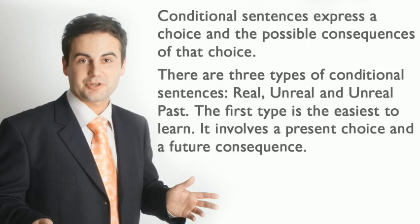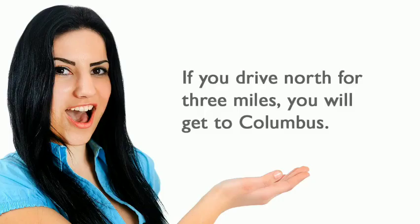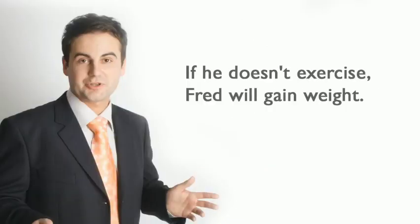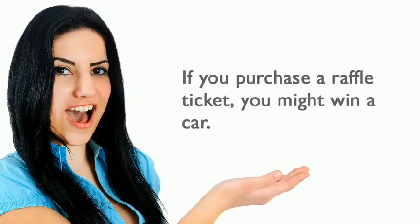The first type is the easiest to learn. It involves a present choice and a future consequence. For example: If you drive north for three miles, you will get to Columbus. If he doesn't exercise, Fred will gain weight. If you purchase a raffle ticket, you might win a car.